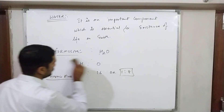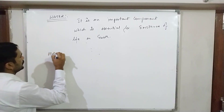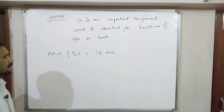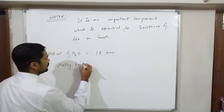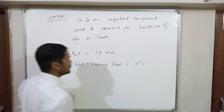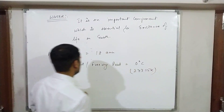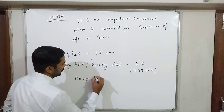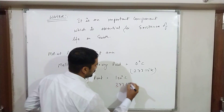The molecular weight of water is 18 AMU. The melting point or freezing point of water is 0°C or 273.15 Kelvin. The boiling point of water is 100°C or 373.15 Kelvin.